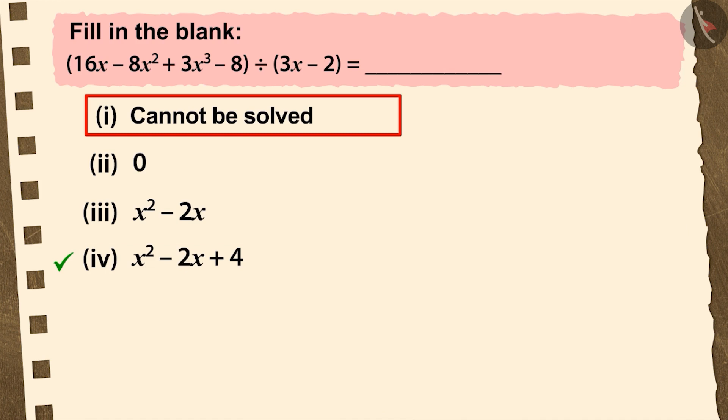If you have chosen the first option, it is a good try. But this is the wrong answer because before starting the division process, you did not write the dividend in the standard form, because of which it is almost impossible to solve this division question.